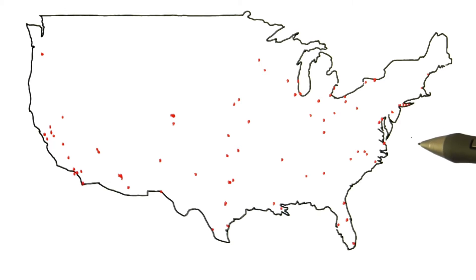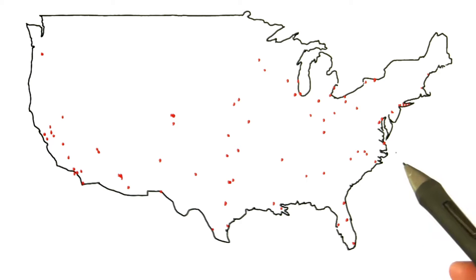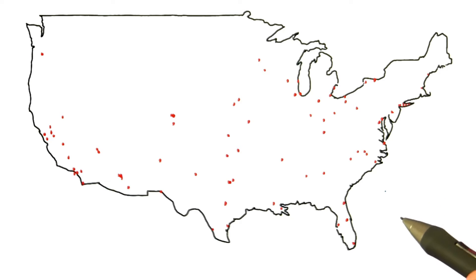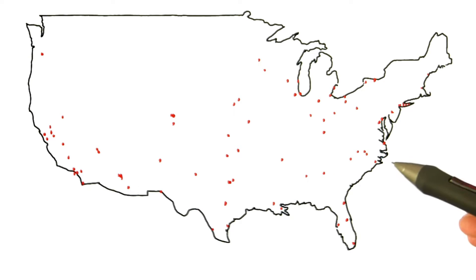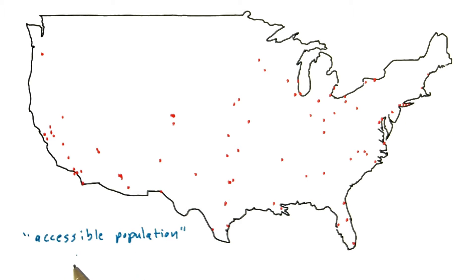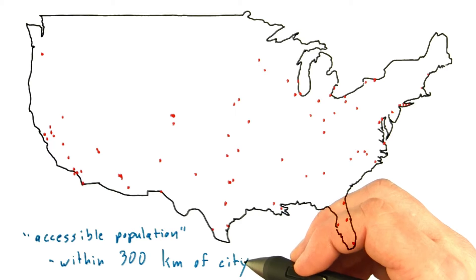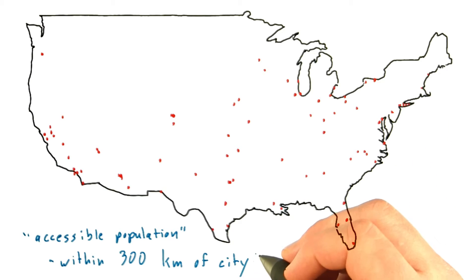Let's suppose that you're trying to figure out the best places to open a chain of stores in the United States. You have a list of cities, and here I traced a map onto the tablet with the 50 largest cities in the U.S. dotted in. You want to know the accessible population of each city — how many people could easily get to a store — defined as all people living in cities within 300 kilometers, people who could go for a long drive and get to your store.